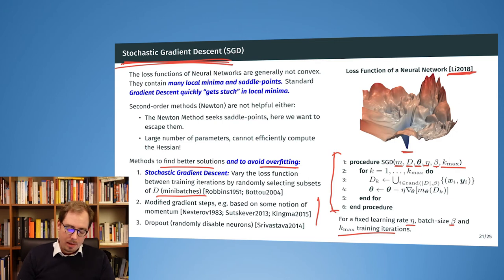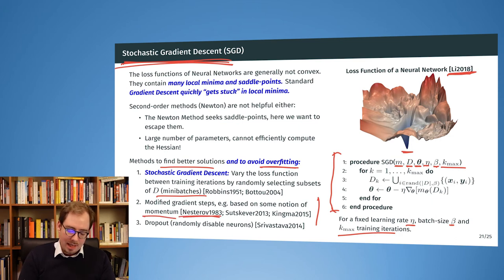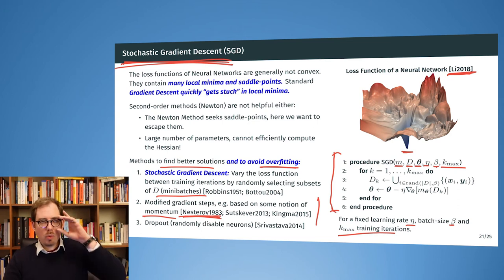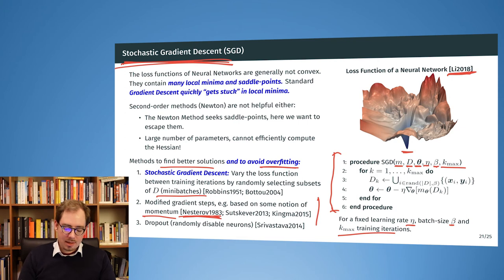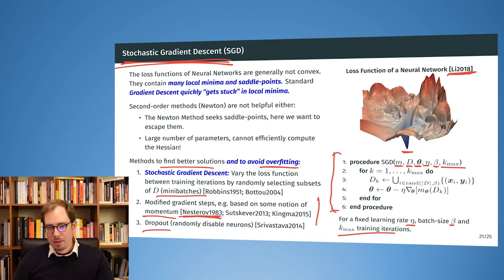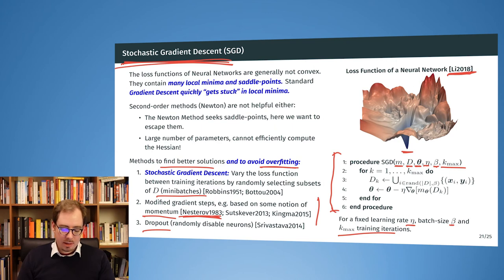There are additional tricks: even without the Hessian, we can improve on simple gradient descent by considering momentum. Here we also encounter Nesterov — the same Nesterov who worked on and improved the barrier method for interior point approaches — who turns out to be hugely influential for neural networks through his ideas on momentum in gradient descent. Last but not least, dropout: by randomly disabling some neurons we also change the topology or loss function from one training iteration to the next, helping with convergence and avoiding overfitting.